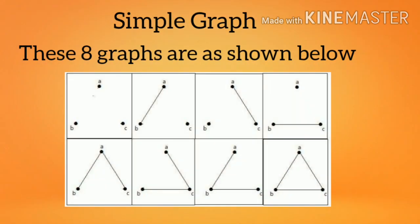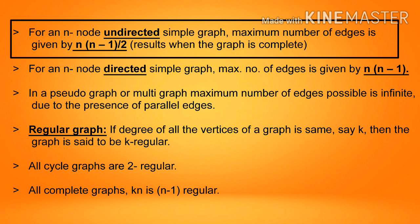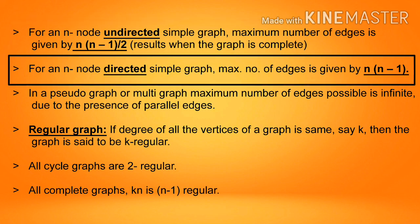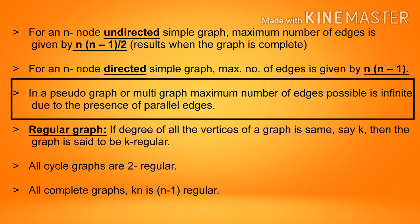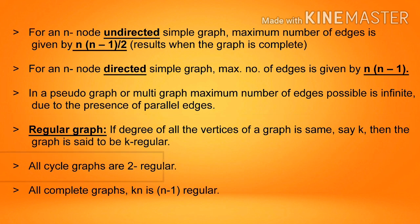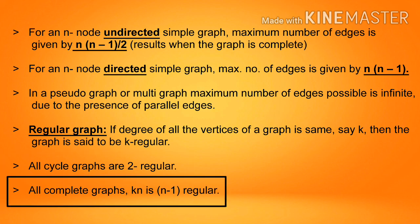These 8 graphs are as shown below. For an N-node undirected simple graph, the maximum number of edges is n(n−1)/2, achieved when the graph is complete. For an N-node directed simple graph, the maximum number of edges is n(n−1). In a pseudograph or multi-graph, the maximum number of edges possible is infinite due to the presence of parallel edges. Regular graph: if the degree of all vertices of a graph is the same, say K, then the graph is K-regular. All cycle graphs are 2-regular; all complete graphs Kn are (n−1)-regular.